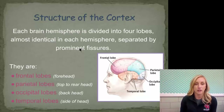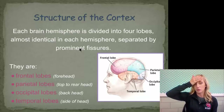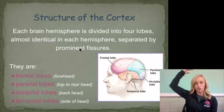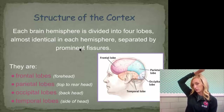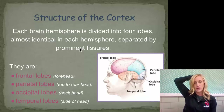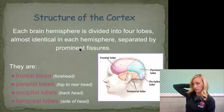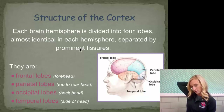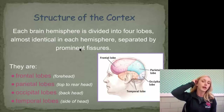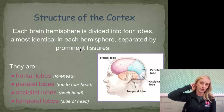We've got four lobes: the frontal lobe, which is right behind your forehead — and notice it's pretty gigantic. Then we have the parietal lobe, which is top to the rear of your head, kind of on that flatter crown part. In the very back is the occipital lobe — you've got kind of a hump there. And your temporal lobe is around your ears.